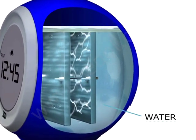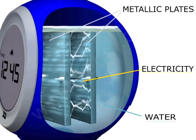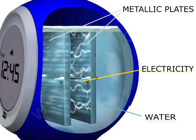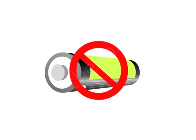Simply fill it with water and a natural chemical reaction that occurs between two of its internal metallic plates generates enough eco-friendly electricity for the clock to keep perfect time and do so indefinitely.